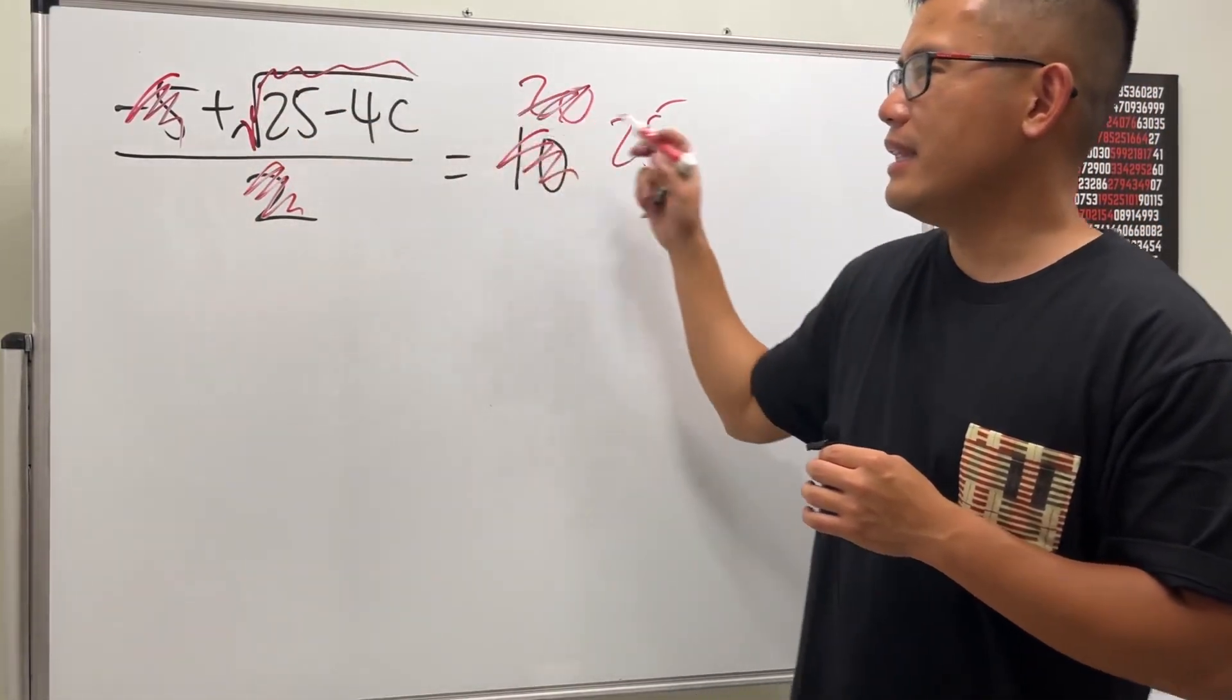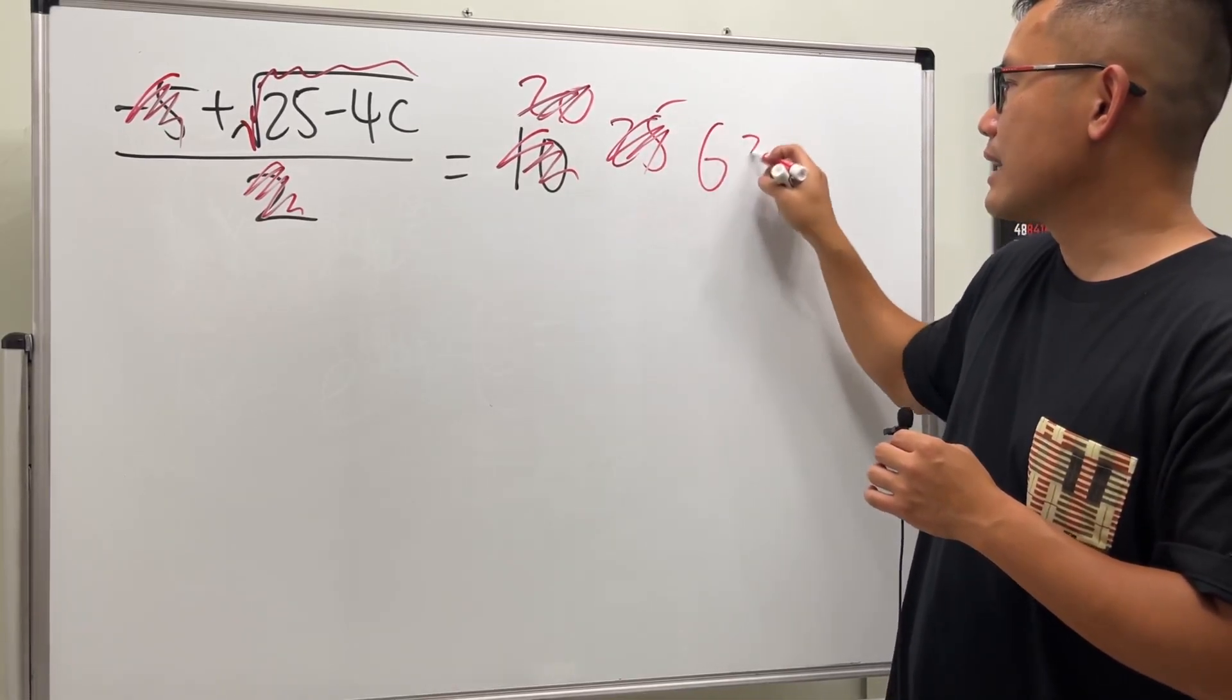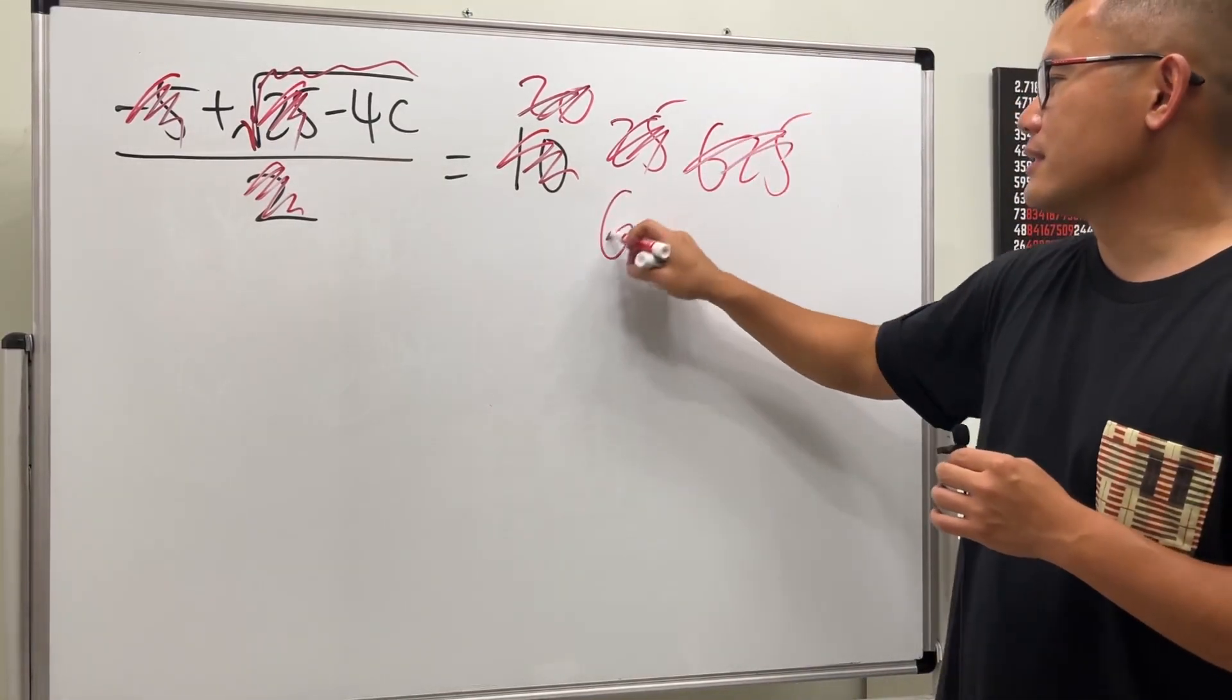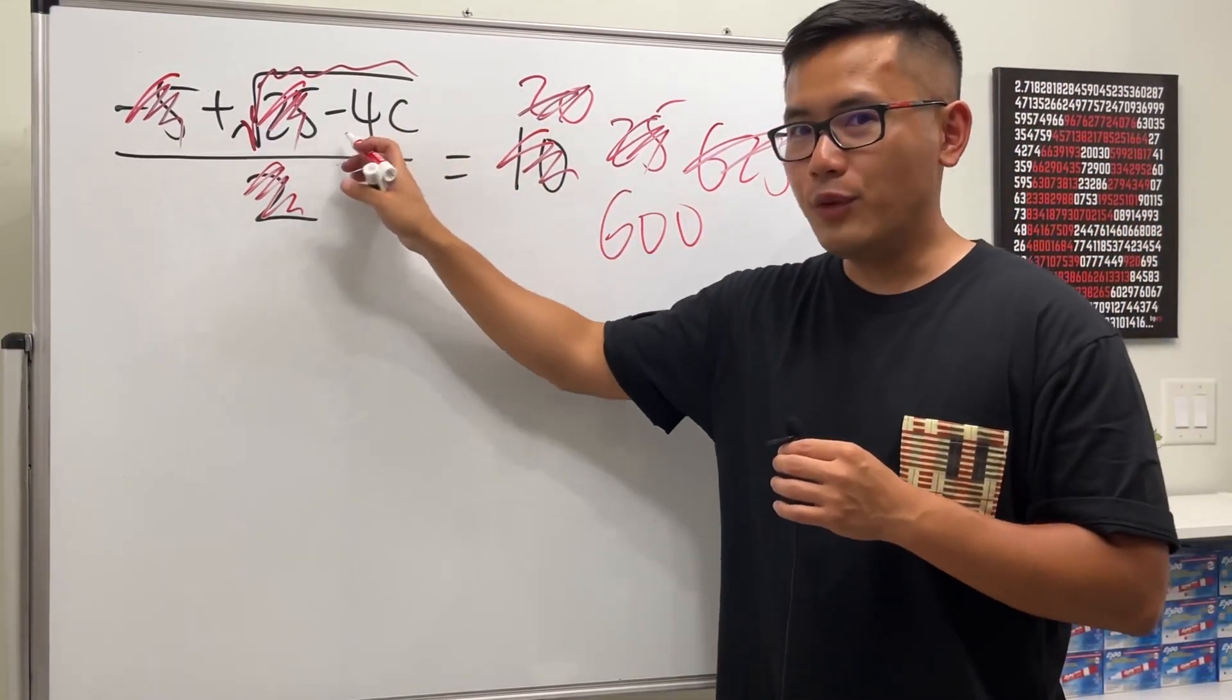Now we have to get rid of the square root. Just get rid of it and then square both sides. We have to do 625 right here. Now we have to get rid of this 25, just get rid of it. We'll have 600. Now this is negative 4 times c.